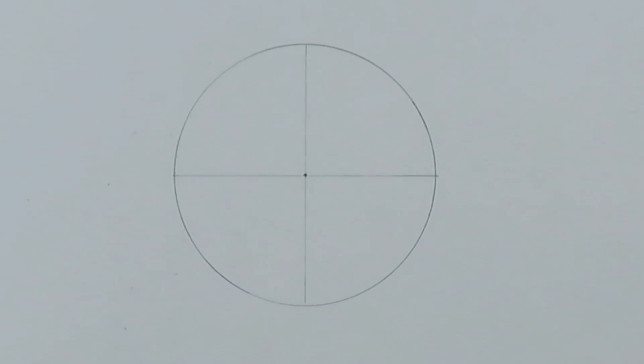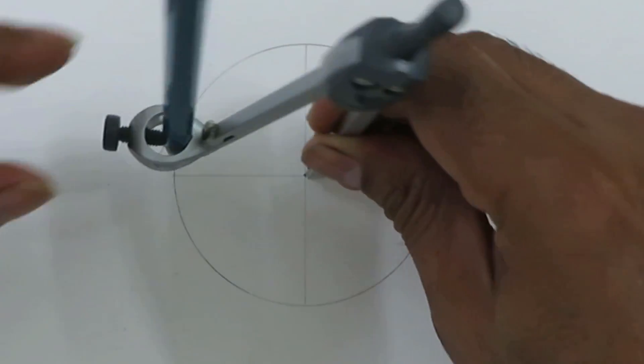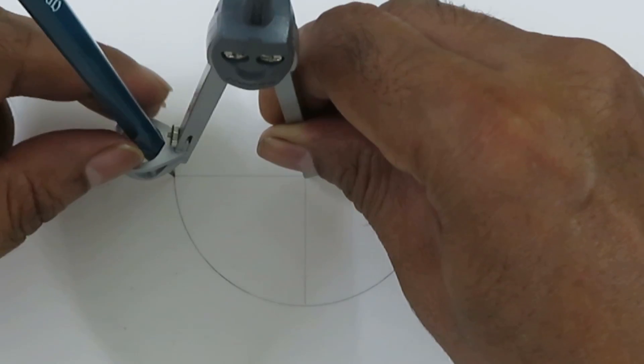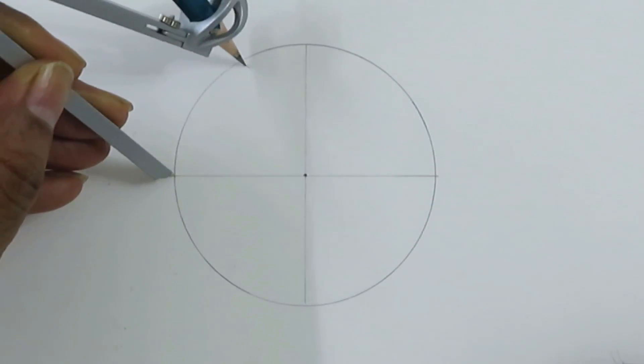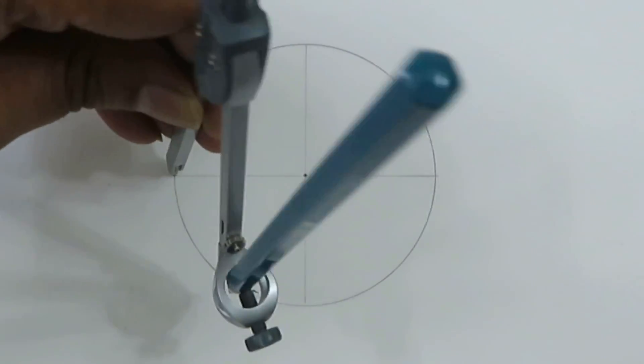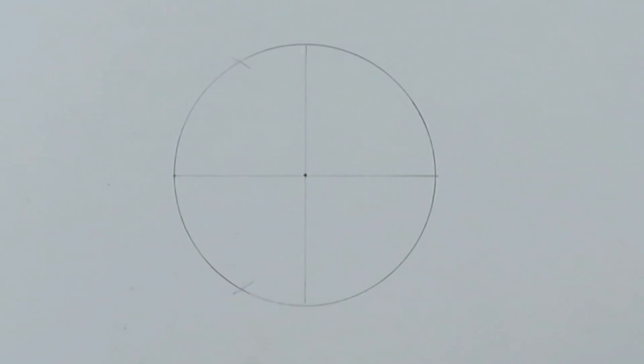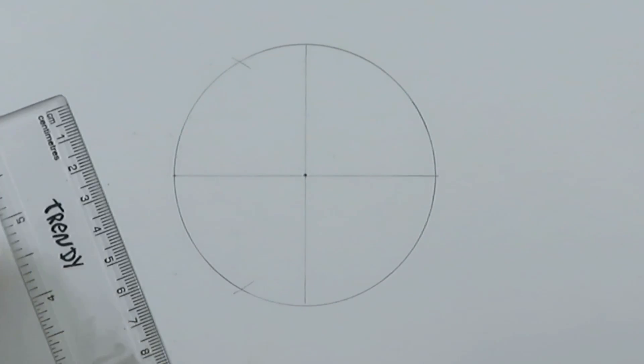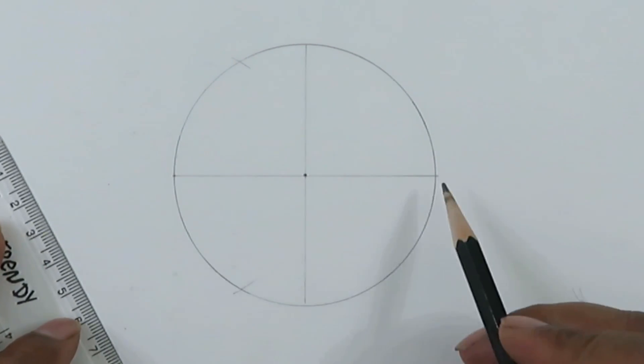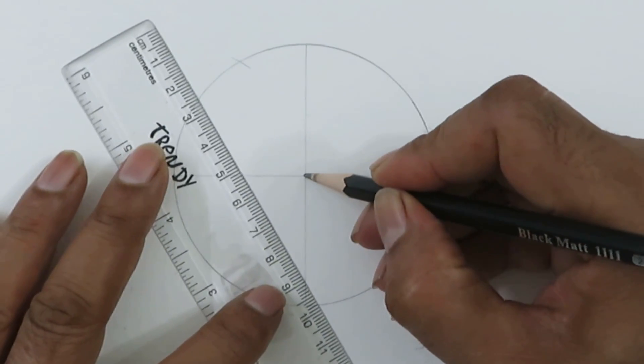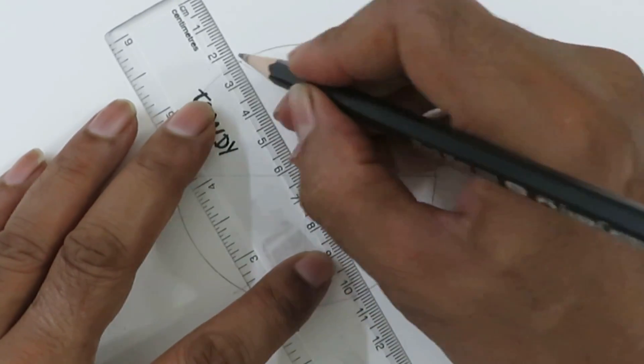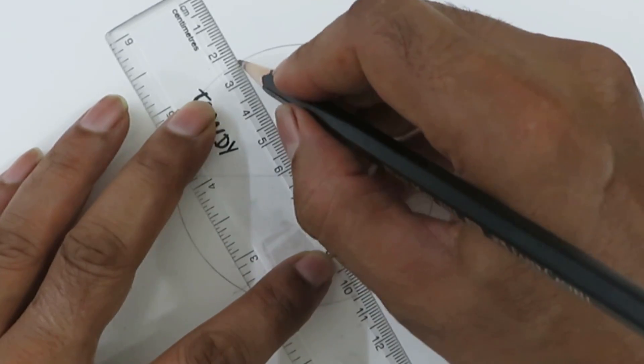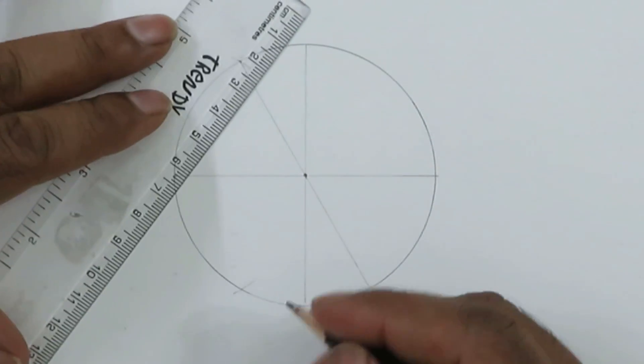After drawing these two diameters, you start with the same radius and cut at these two points from any side, either this side or this side, and draw these diameters. We'll use the thin line.